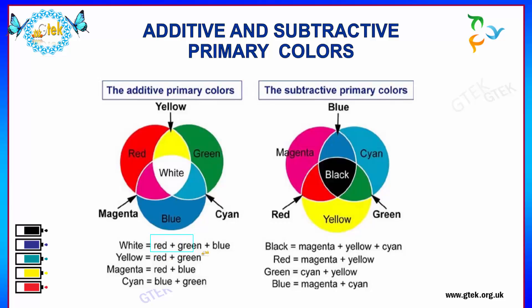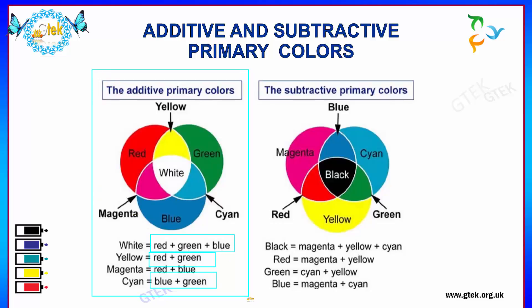The combination of red, green and blue gives us white color. The combination of red and green gives yellow. The combination of red and blue gives magenta. And the combination of blue and green gives us cyan. These are considered to be the additive primary colors.